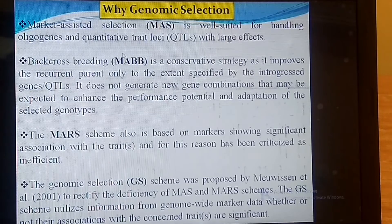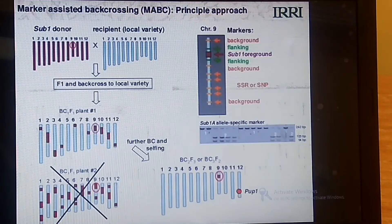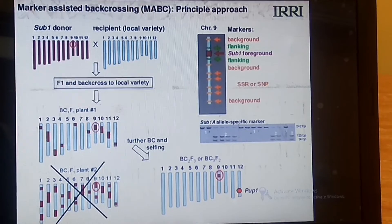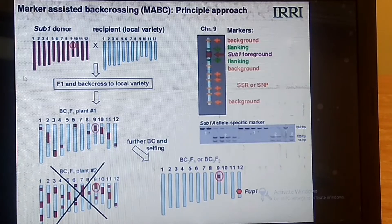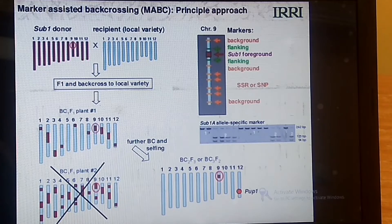In marker-assisted backcross breeding we take one donor variety and one recurrent parent. From the donor we transfer the target gene to the recipient variety, and with the help of markers we perform selection. Marker-assisted backcrossing definitely reduces the number of backcrosses compared to traditional plant breeding. However, in the recipient variety we are only transferring a desirable allele or trait that exists in the donor.